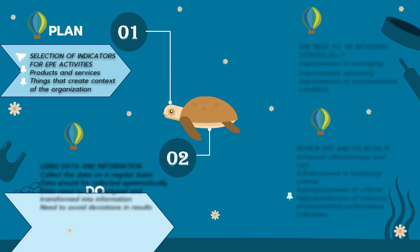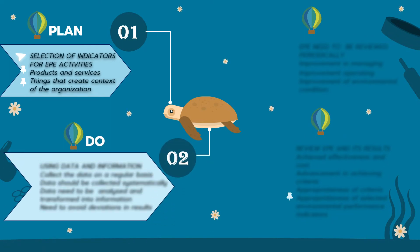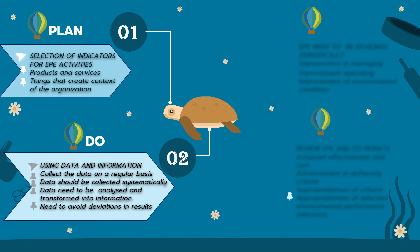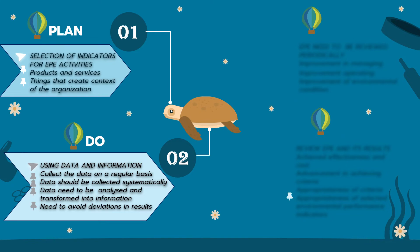Using data and information — Do. The organization should collect the data on a regular basis to provide input for calculating the values of selected environmental performance indicators. The data should be collected systematically, from appropriate sources, and as frequently as determined by management. The collected data should be analyzed and transformed into information that describes the effectiveness of environmental protection. To avoid deviations in results, all relevant and reliable collected data must be considered.